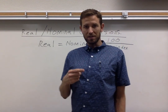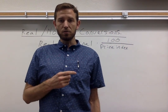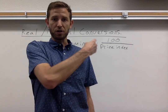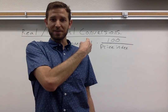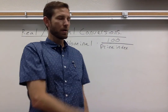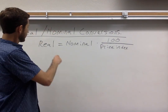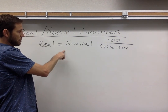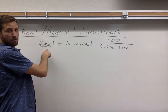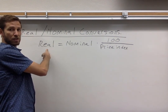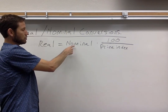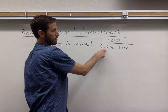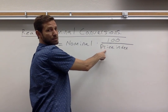Your textbook is going to show you several different techniques that you can use, and you're welcome to use those. I'm going to show you the one I'm more comfortable with — I think this one is easier to use. The process you're going to want to use is to recognize this formula: real data, regardless of whether it's GDP, wages, or anything, is equal to the nominal data multiplied by 100, divided by the price index in that particular year.